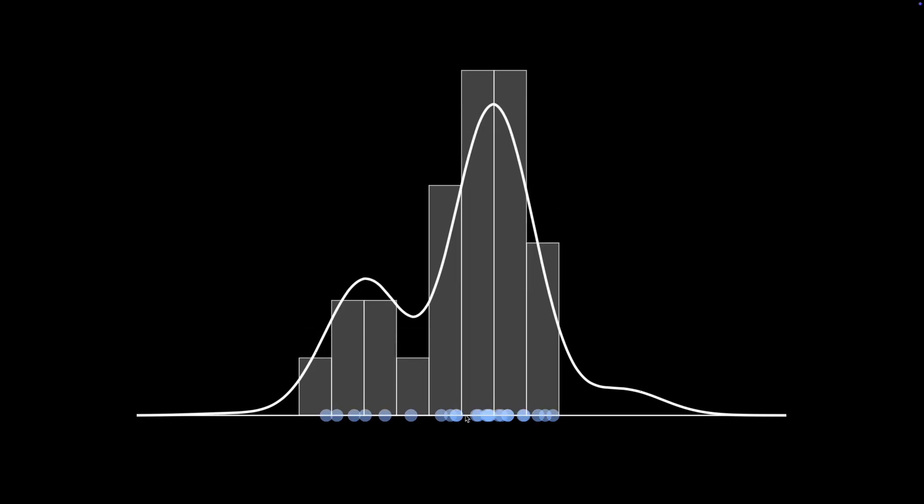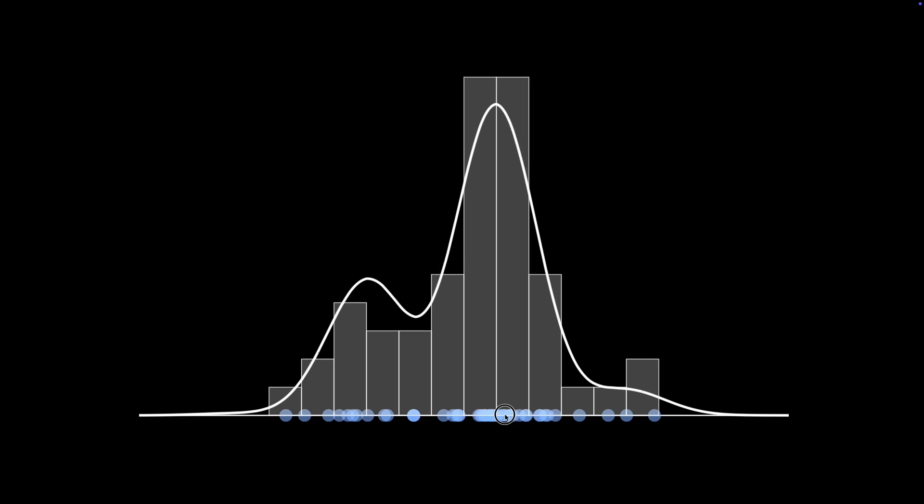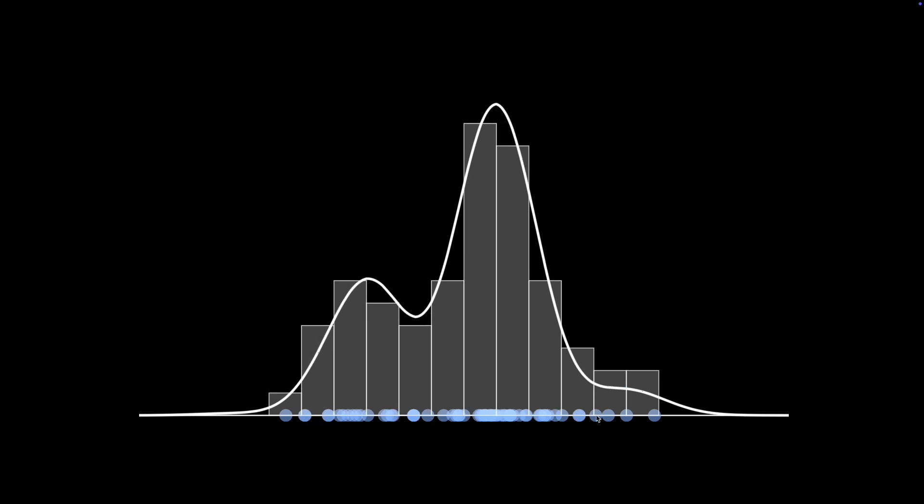My strategy here is to put most of the samples in regions where the density is high. But every once in a while, I also want to put samples in low density regions too. And the frequency with which I do this is dependent on how high or low the density is.